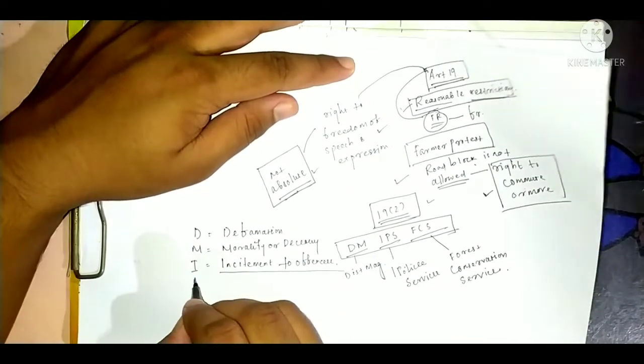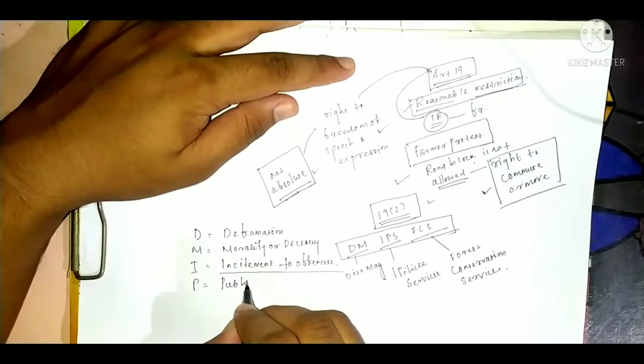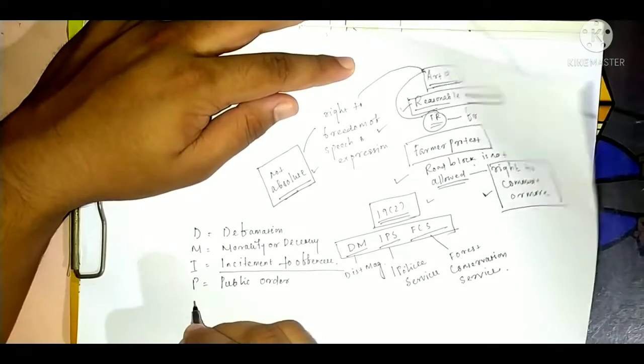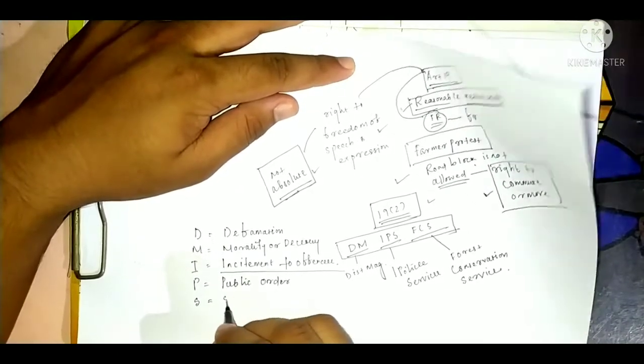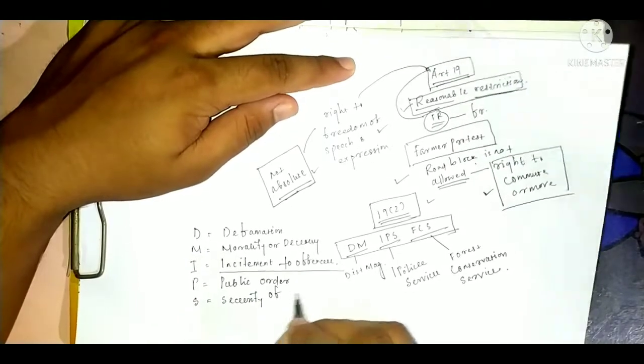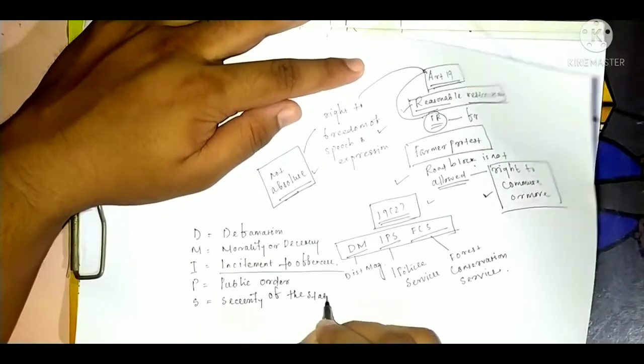Then, P is public order. Then, S is security of the state.